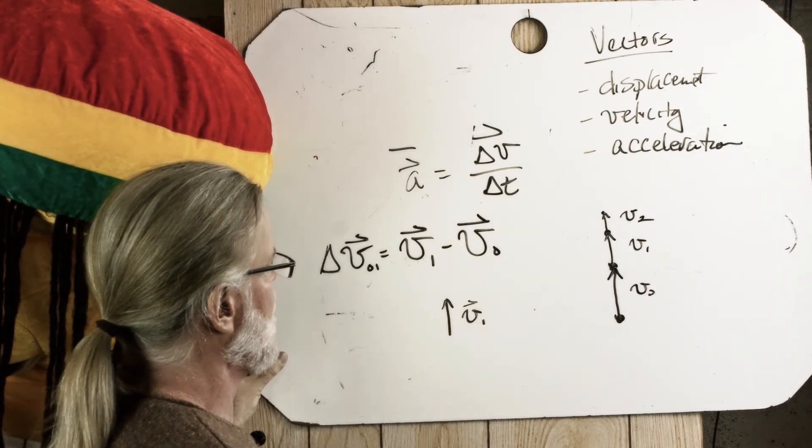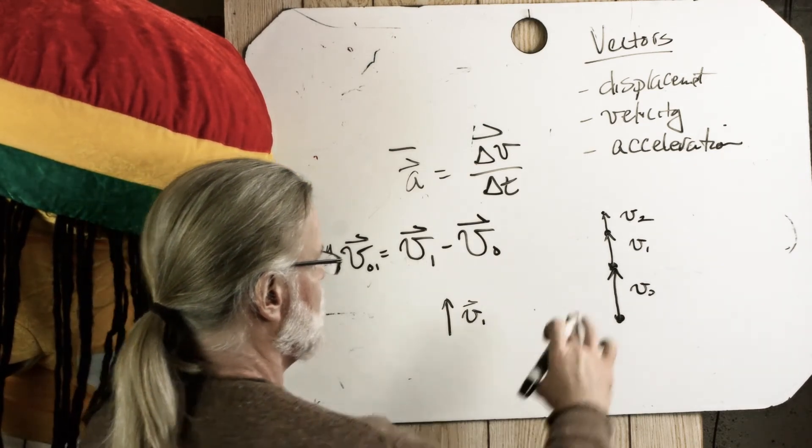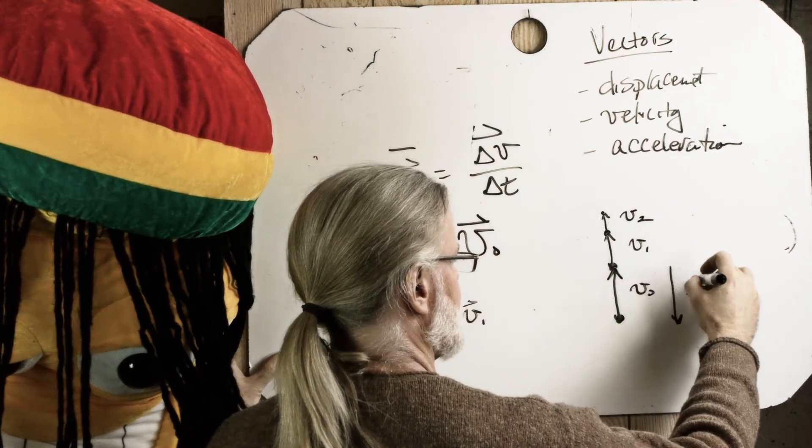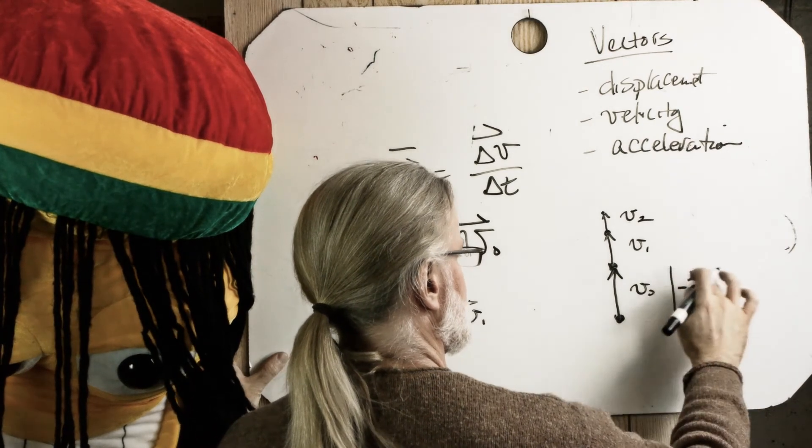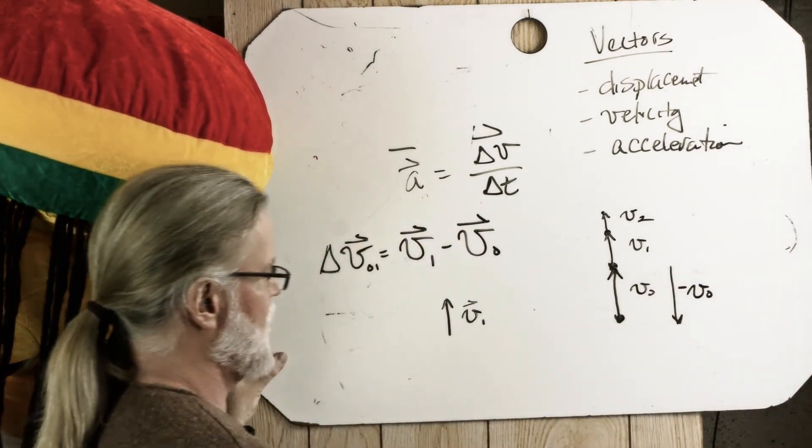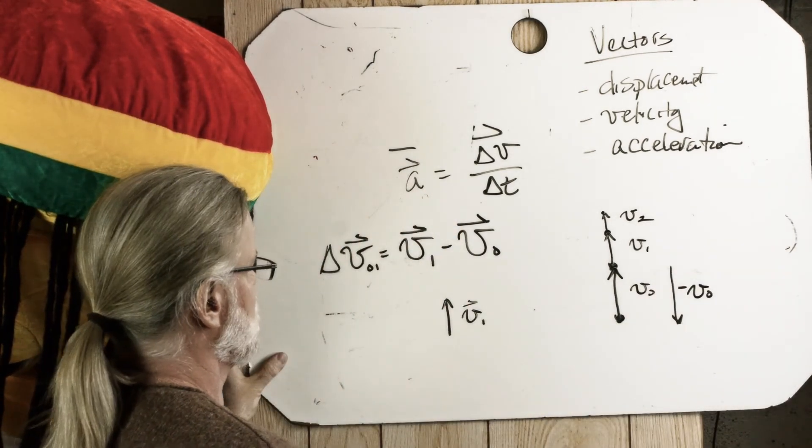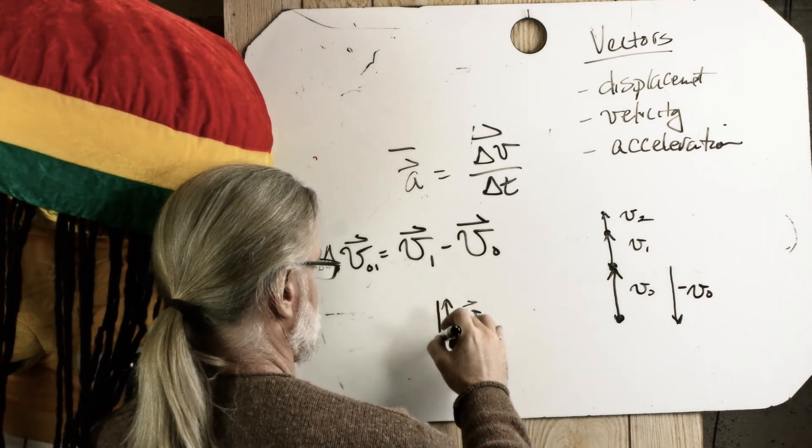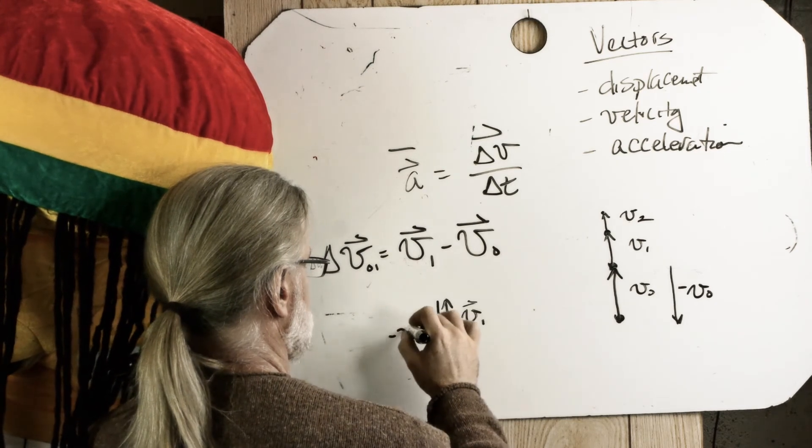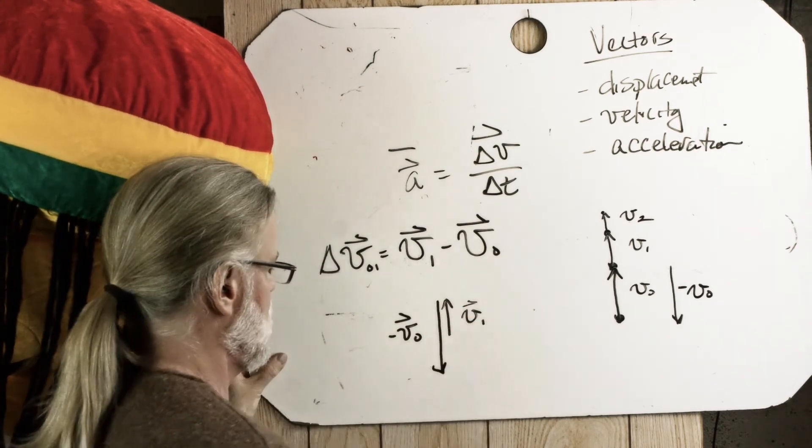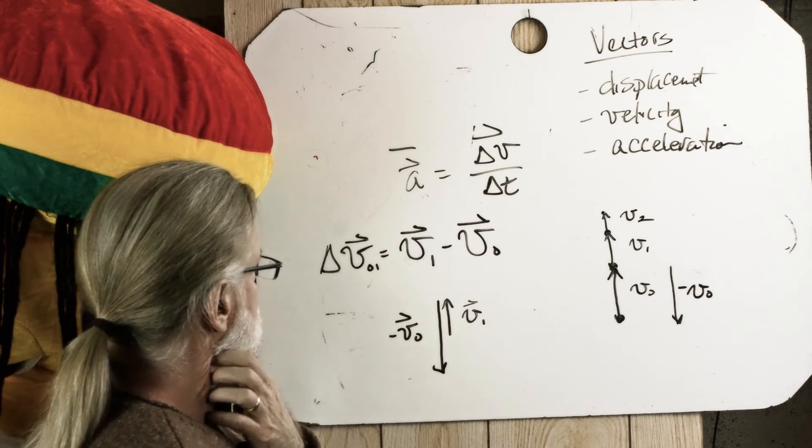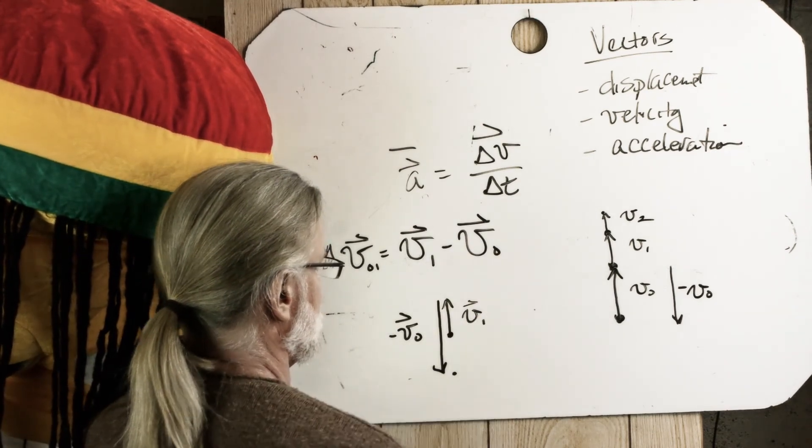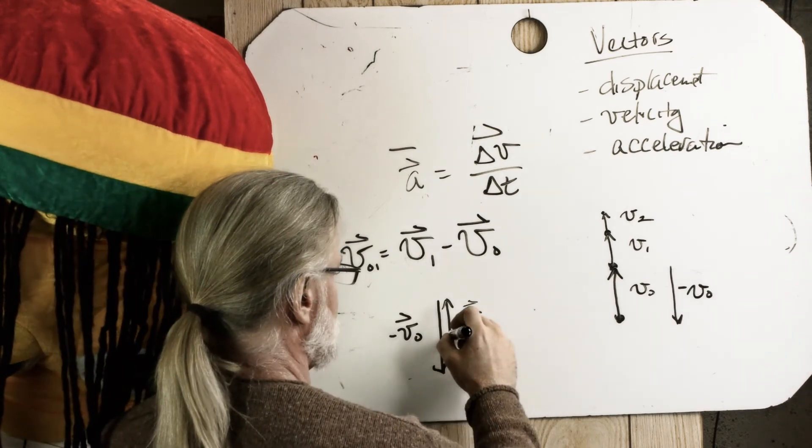And minus V0. If that's V0 then minus V0 looks something like that. So I'm going to add that tip to tail. Just draw it like that. Minus V0 and we started here and we end here. So this must be delta V.